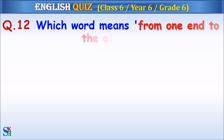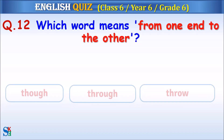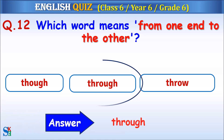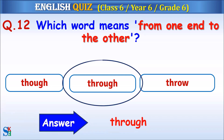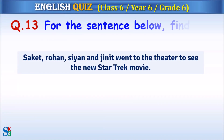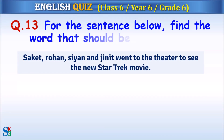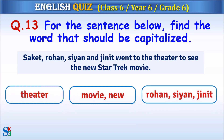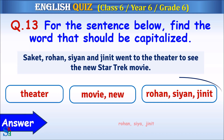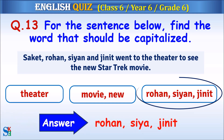Question 12: Which word means 'from one end to the other'? The answer is 'through.' Question 13: For the sentence below, find a word that should be capitalized. The answer is 'Rohan,' 'Siya,' and 'Jinit.'